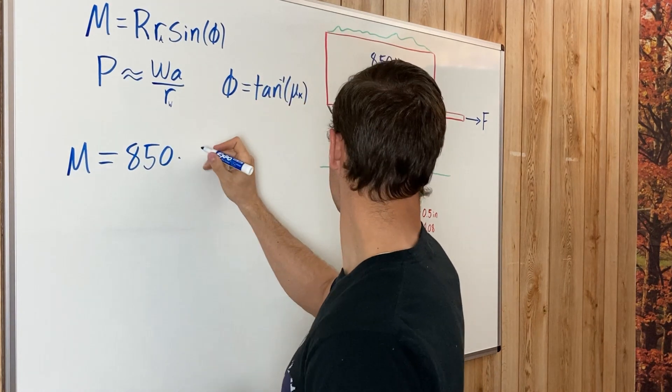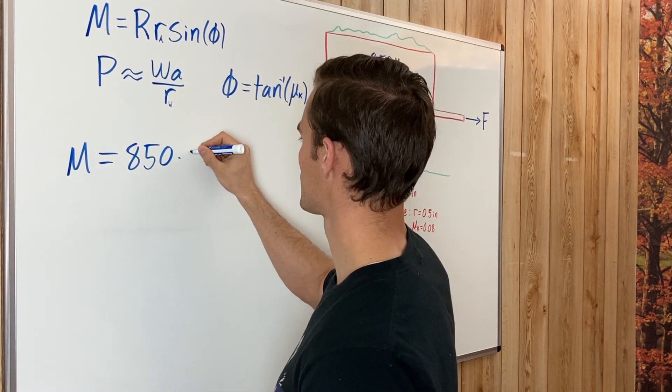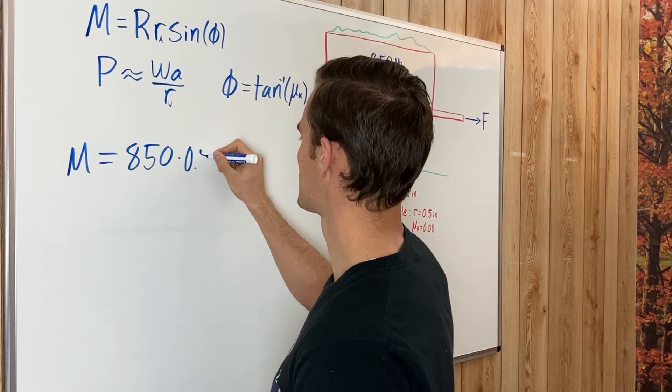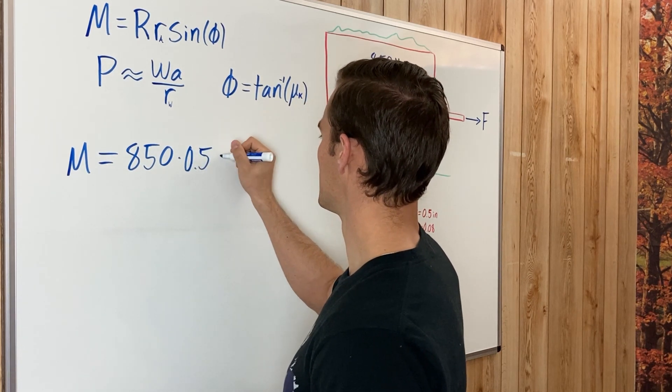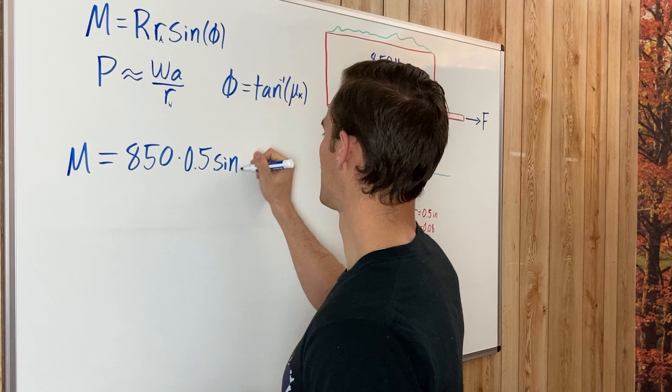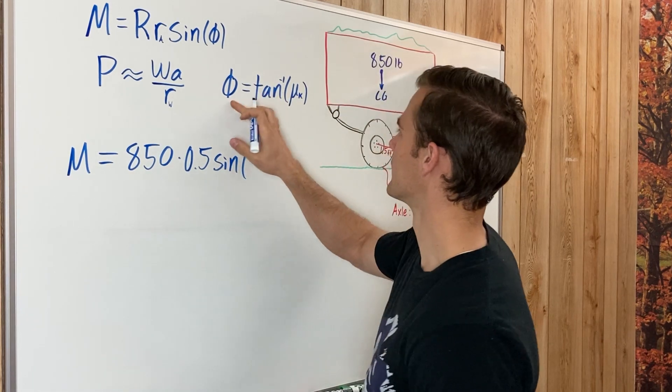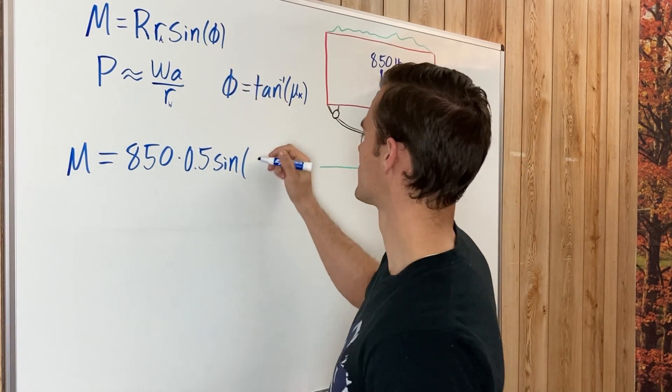That's multiplied by little r, which is the radius of the axle, which is a half an inch. And then the sine of...